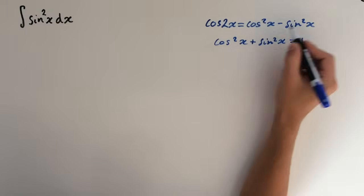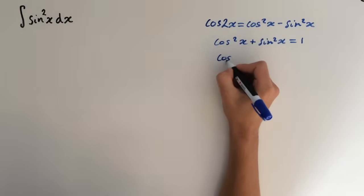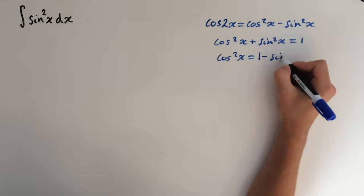So let's substitute this one into this one. If we rearrange for cos, cos squared x equals 1 minus sin squared x.